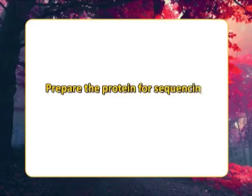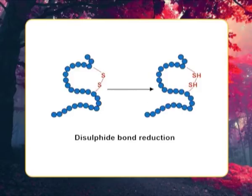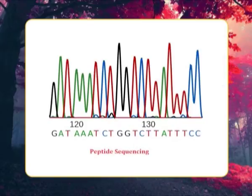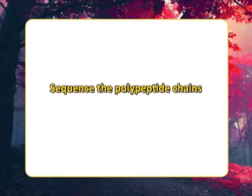The procedure consists of three conceptual parts, each of which requires several laboratory steps. First, prepare the protein for sequencing. It includes end group analysis, cleavage of the disulfide bonds, separation, purification and characterization, specific peptide cleavage reactions, sequence determination, ordering the peptide fragments, assignment of disulfide bond positions, and sequencing the polypeptide chains.